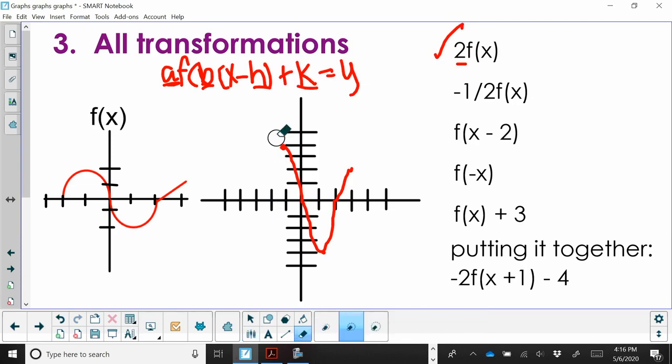The second one is what if I multiply it by a negative 1 half? The negative will reflect it over the x-axis, and the 1 half will shrink it. So instead of coming up to 2 and down to negative 2, I'm only going to come up to 1 and down to negative 1.